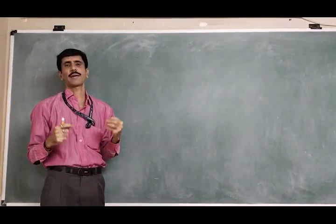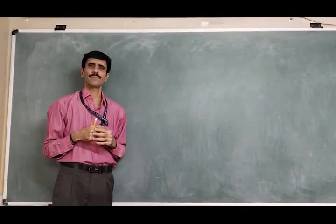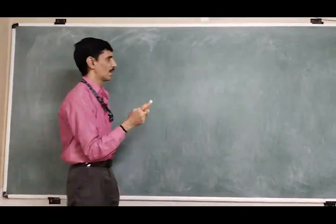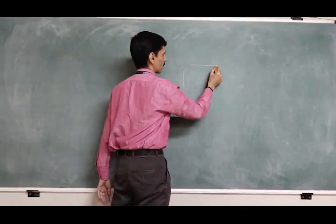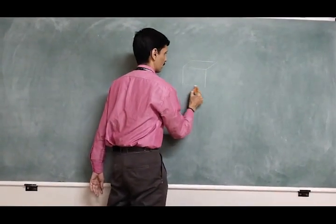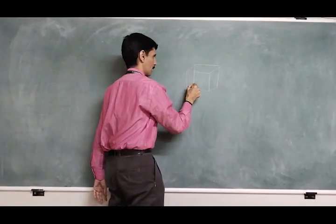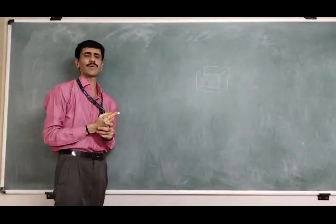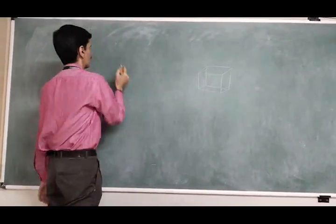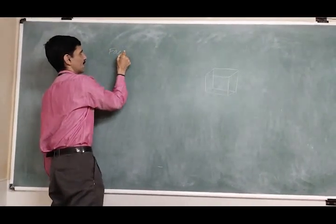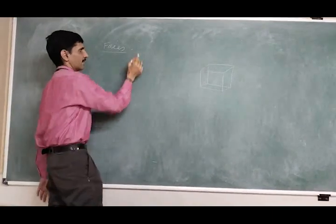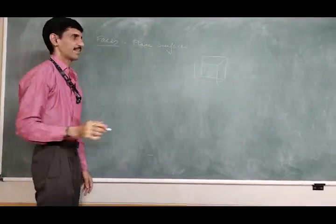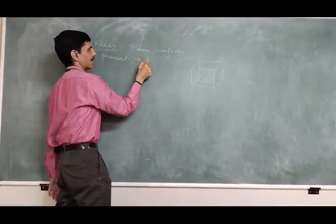Now with respect to geometry, let us consider a unit cell and take the example of a cubic geometry. With respect to this geometry, we need to discuss some terms. The first term is faces. Faces are the plane surfaces which are present in the unit cell.